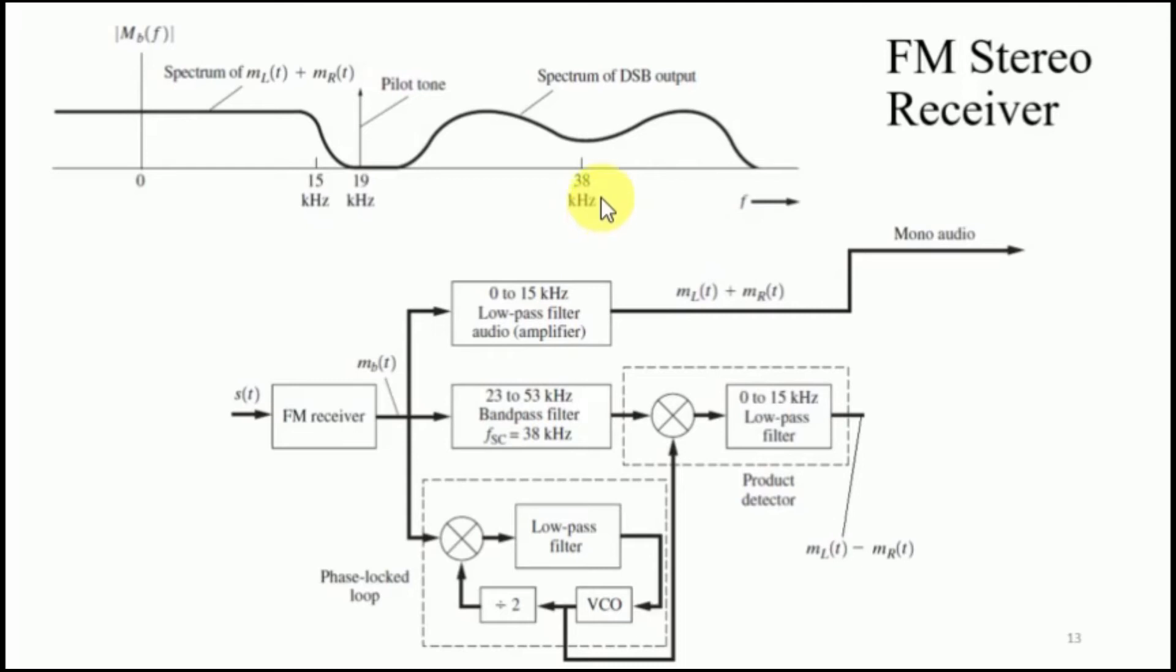At the same time we would track the carrier frequency that is 38 kHz by means of a phase lock loop. We will feed this signal to a PLL which includes a multiplier or a phase detector that is followed by a low pass filter, a voltage control oscillator. And the output of a voltage control oscillator is divided by a frequency divided circuit by 2 which is then fed to the phase detector. Note that the pilot is at 19 kHz. This PLL will be tracking 19 kHz. Over here you would have 19 kHz and hence over here you would have 38 kHz.